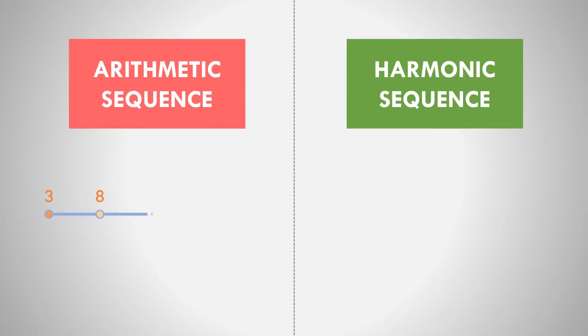Another example of arithmetic sequence is 3, 8, 13, 18, and 23. If we get the common difference — second term minus the first term — 8 minus 3, the answer is equal to 5. So the common difference from the first up to the last term is equal to 5.